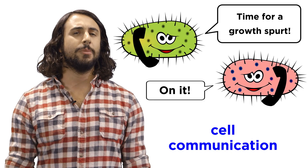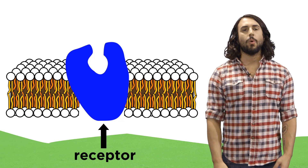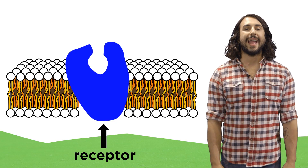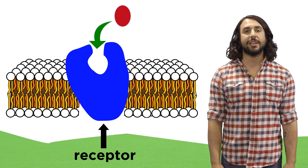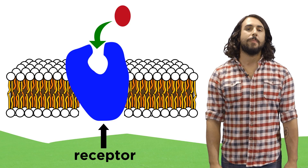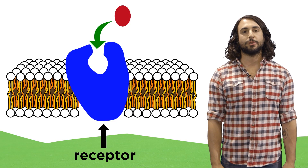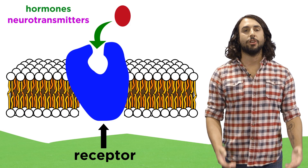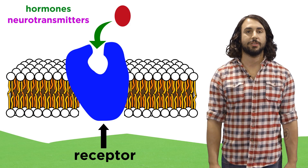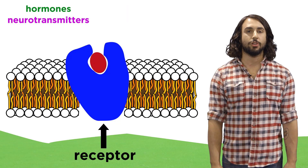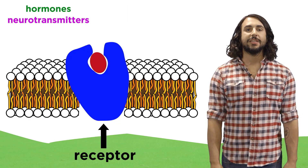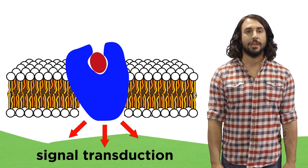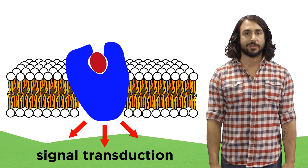How does this communication take place? Well, we learned about receptors that sit in the cell membrane and wait for a particular substrate to bind. Many of these receptor substrates are signaling molecules like hormones and neurotransmitters, which upon binding to the receptor set off the process of signal transduction, which can have a variety of results.